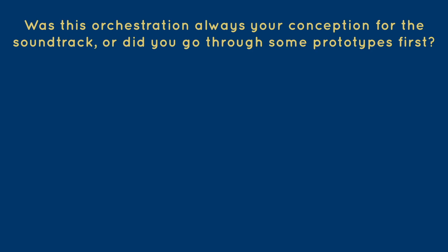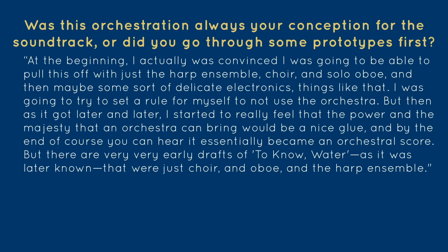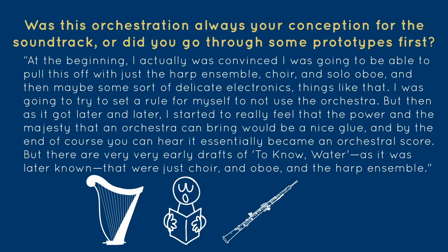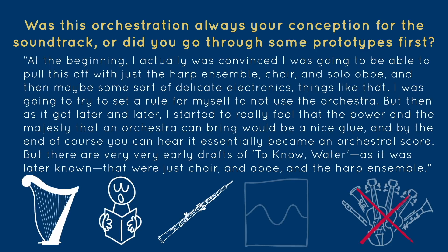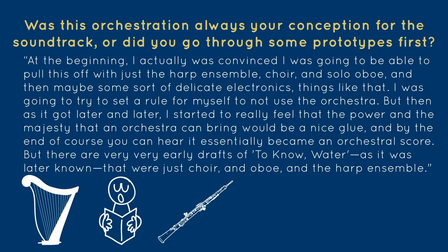Austin, was this orchestration always your conception for the soundtrack, or did you go through some prototypes first? At the beginning, I actually was convinced I was going to be able to pull this off with just the harp ensemble, choir, and solo oboe, and then maybe some sort of delicate electronics. I was going to try to set a rule for myself to not use the orchestra. But as it got later and later, I started to really feel that the power and majesty an orchestra can bring would be a nice glue. By the end, of course, it essentially became an orchestral score. But there are very early drafts of To Know Water that were just choir and oboe and the harp ensemble.